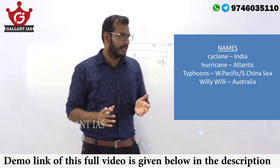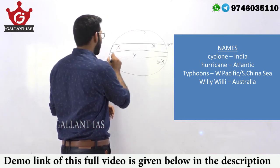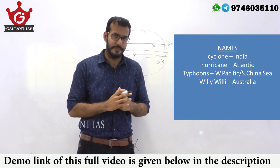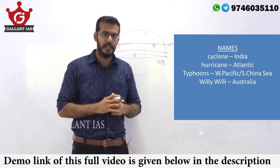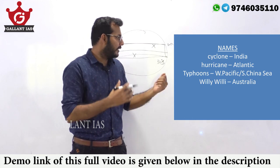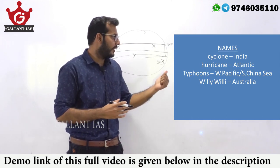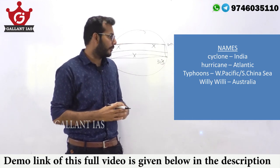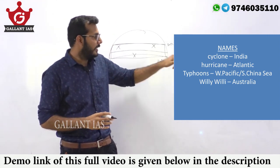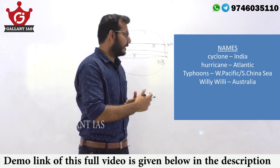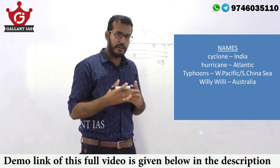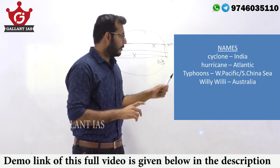Their structure, origin, and roughly the area they occupy — the tropical region — are all the same. But this could be a potential question for your exam. They could jumble it up and ask you to identify the correct answer from the options given. So take note: the names and the corresponding areas where they develop are important. In India it is simply known as a cyclone; in Australia they are known as willy-willies.